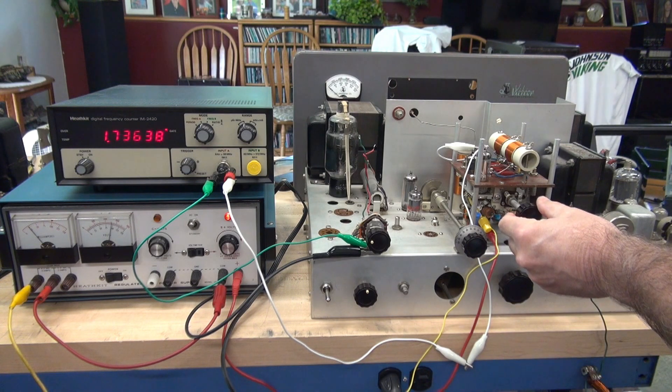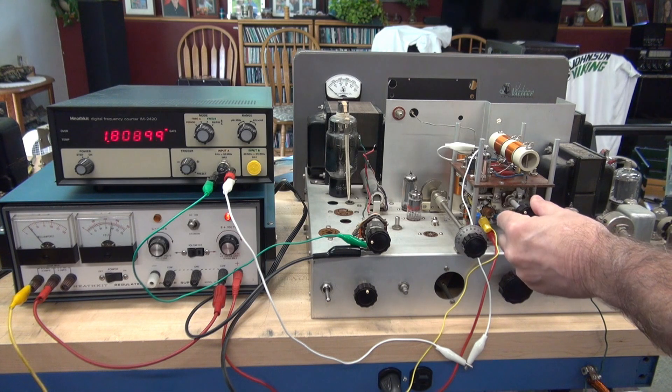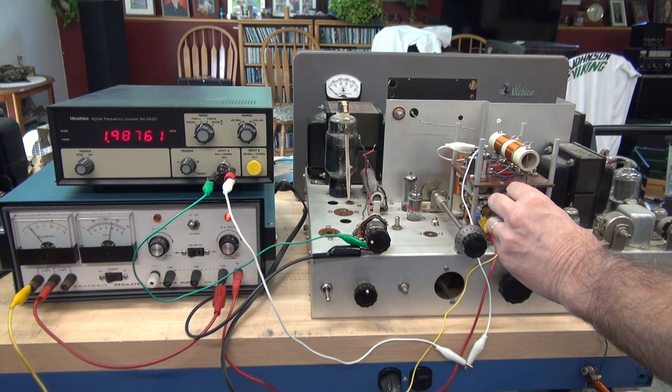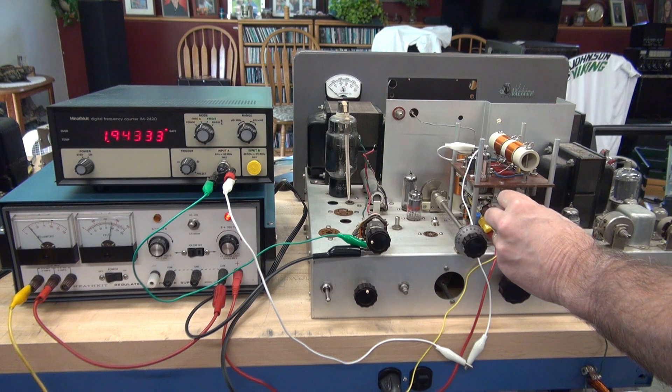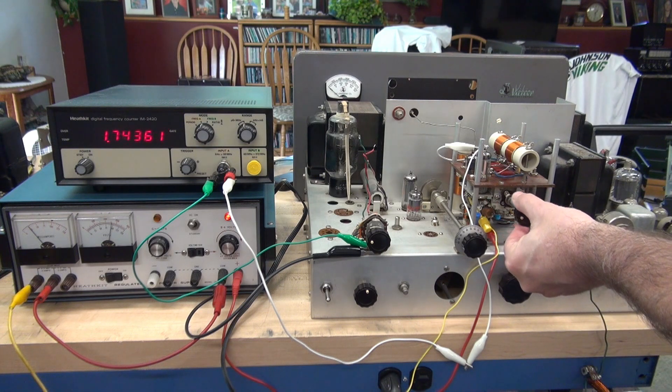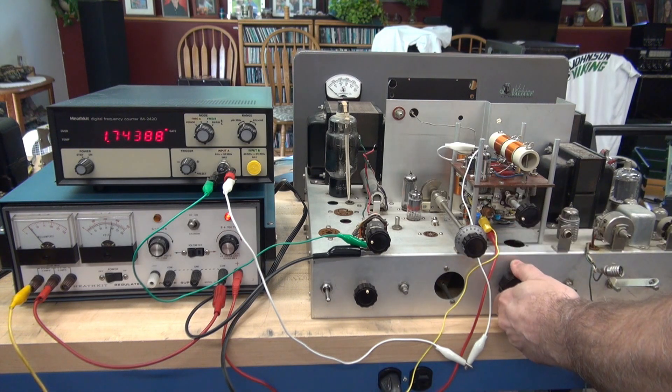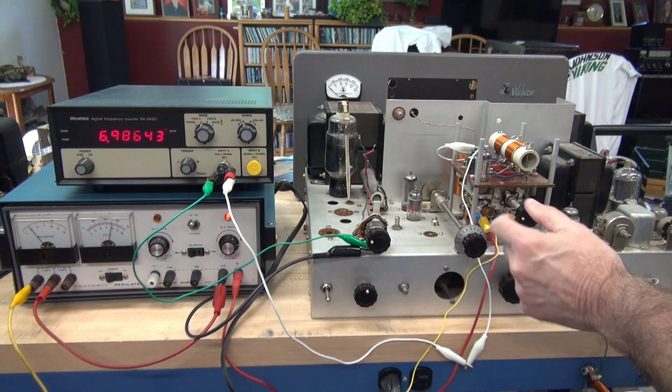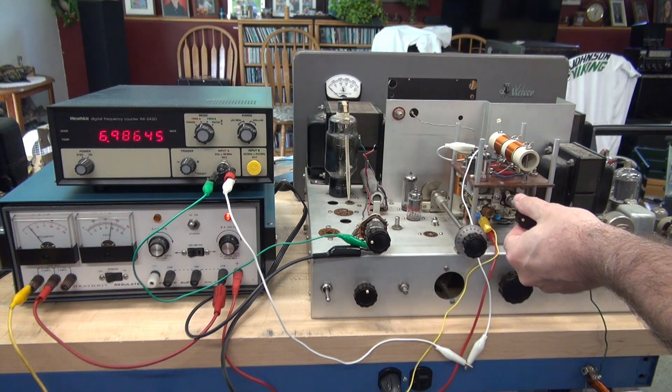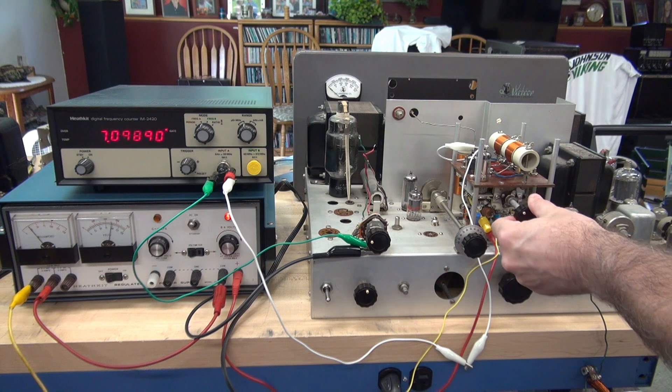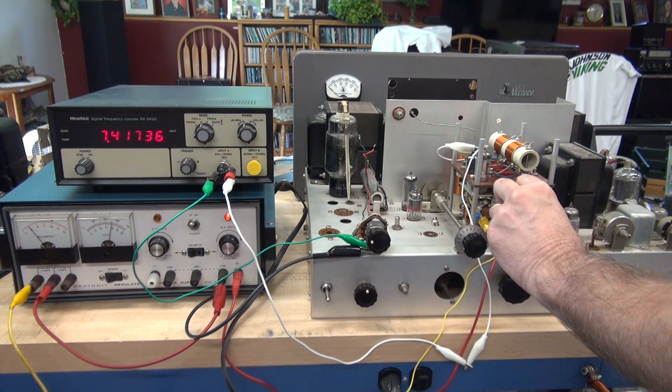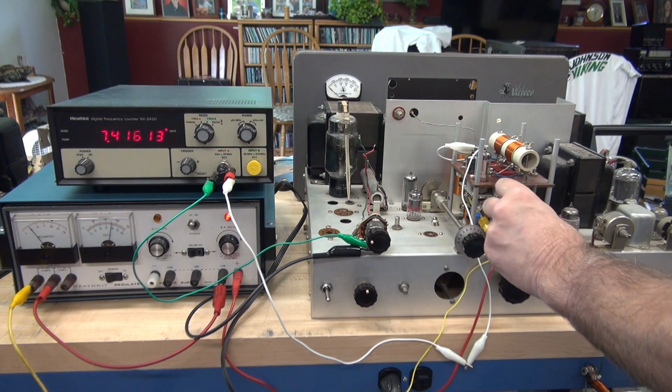We're going to take our tuning, we're going to go from low side to the high side, and make sure that we have output from the VFO, which we do. Now we'll advance to 40 meters. You see it jumped up to just under 7 megacycles. We're going to adjust that up. You're going to see about 7.4. That's good.